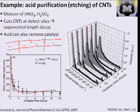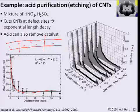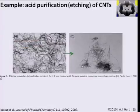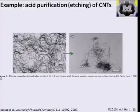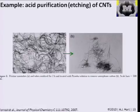Even though the nanotubes get cut up, comparing TEM images from before and after the process shows that the nanotubes are made a lot cleaner — the cloudier image with dark catalyst spots and impurities becomes much cleaner after acid treatment, even though the tubes are shorter segments. The length was assessed by dispersing tubes at low concentration and measuring average length using an SEM.